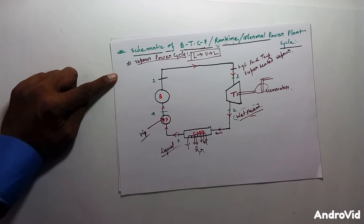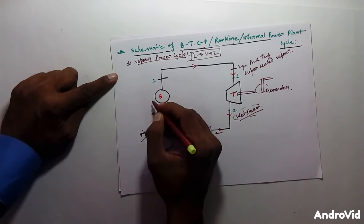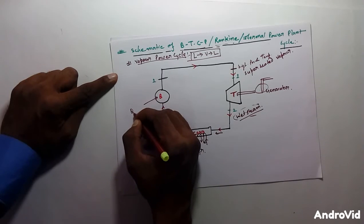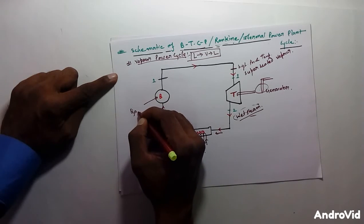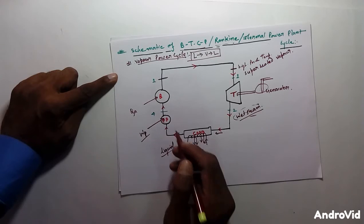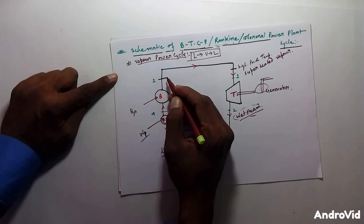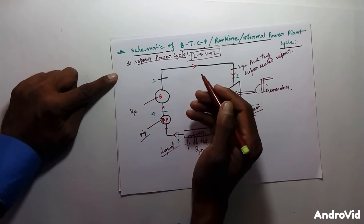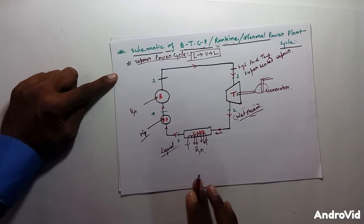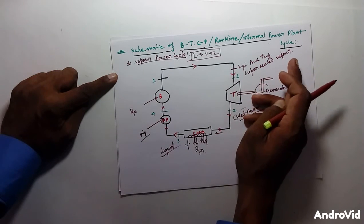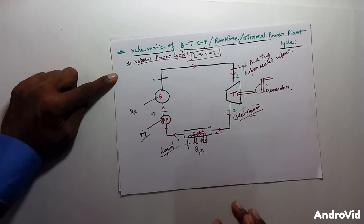In the boiler, we add heat to convert this sub-cooled liquid into superheated vapor — that is, high pressure and high temperature steam. This completes the schematic description of the Rankine cycle.